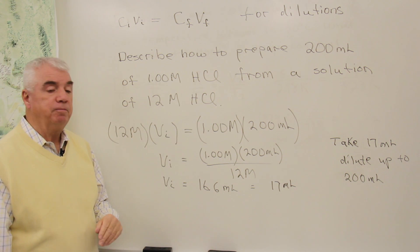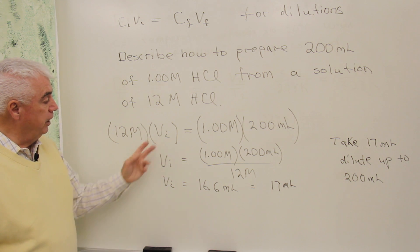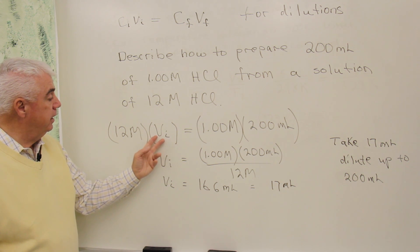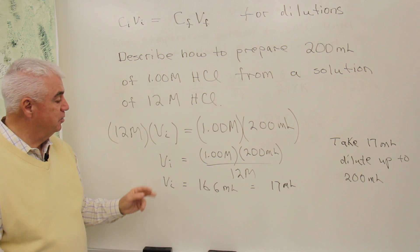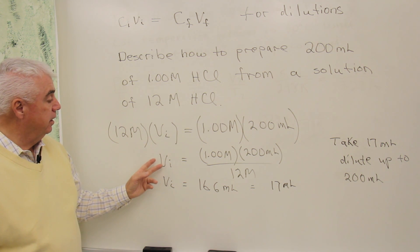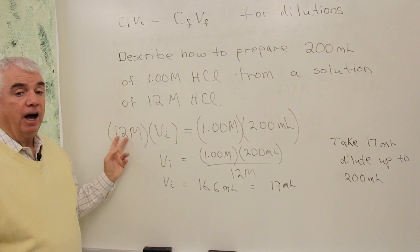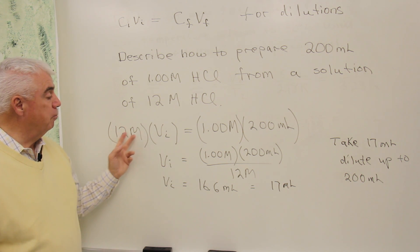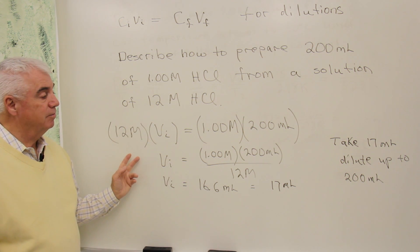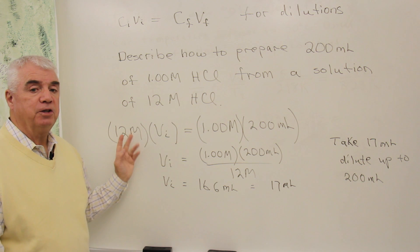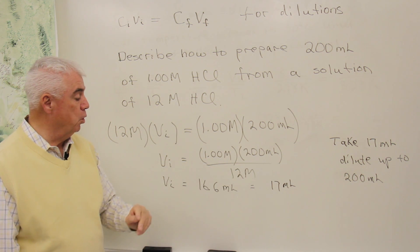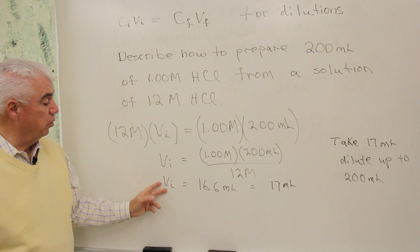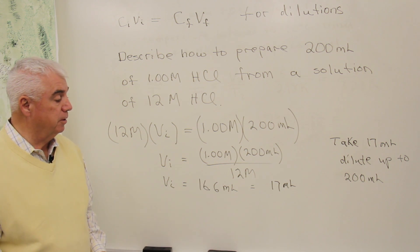Well, with this equation, we'd like to solve for V sub i. That means that we want all the numbers on the right-hand side so that we can evaluate that term. If I divide the left-hand side by 12 molar, it would cancel. But whatever we do to this side, we have to do to that side. So we'll divide by 12 molar. And when we do so, we get 16.6 milliliters.